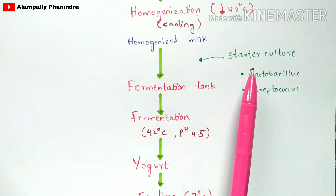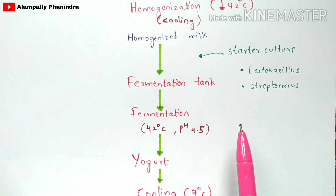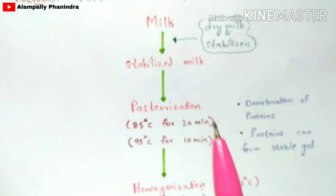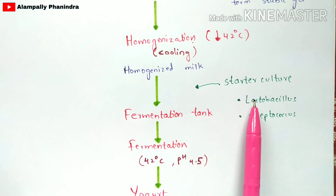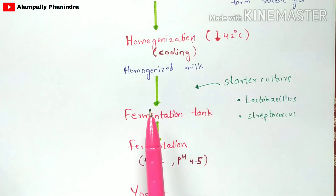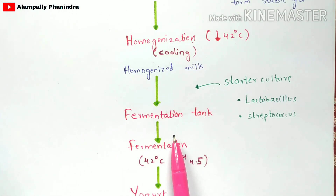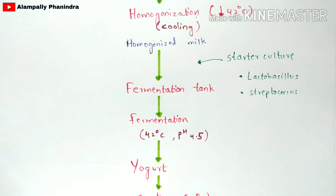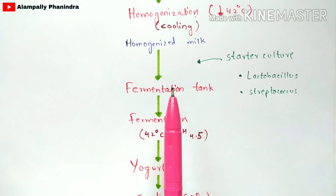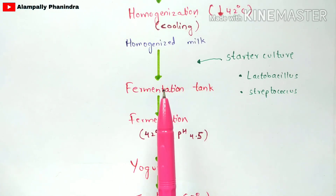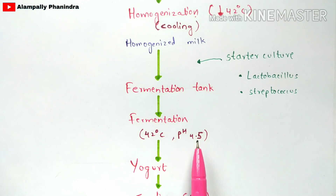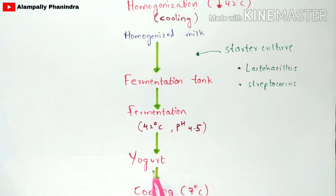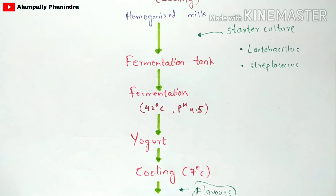Along with the homogenized milk, a starter culture is added. The starter culture contains the microorganisms — Lactobacillus and Streptococcus — required for yogurt production. The fermentation process then begins: the blades in the tank start rotating through agitation, once electricity is supplied. The fermentation is carried out at 42 degrees Celsius and the pH is maintained at 4.5, which leads to the production of yogurt.